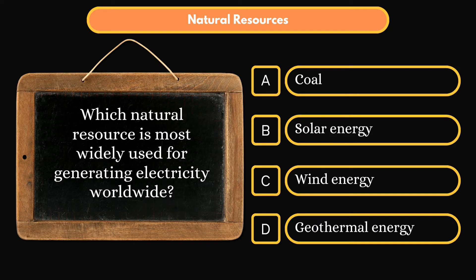Which natural resource is most widely used for generating electricity worldwide? Option A: Coal. Option B: Solar Energy. Option C: Wind Energy. Option D: Geothermal Energy. Correct answer is Option A: Coal.